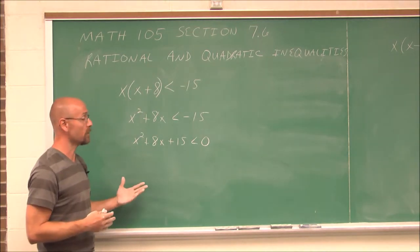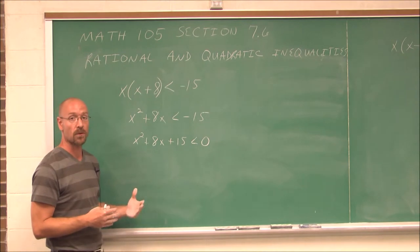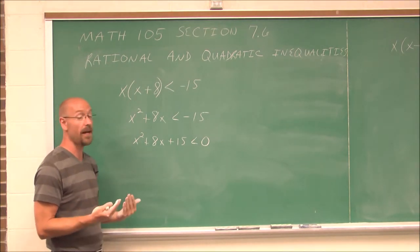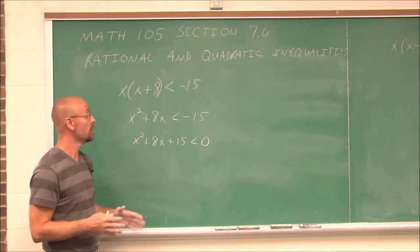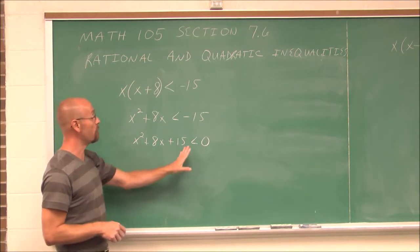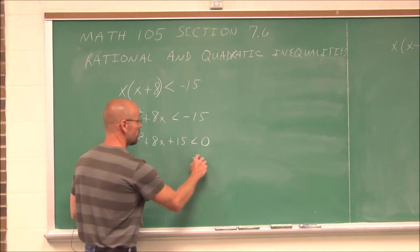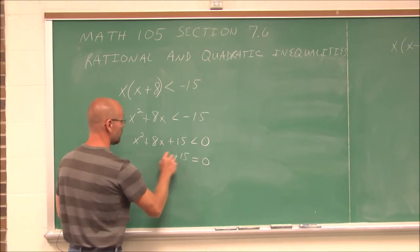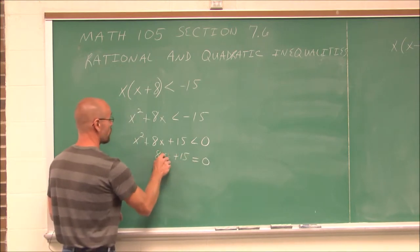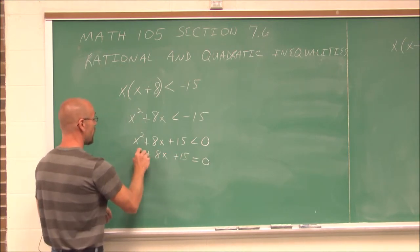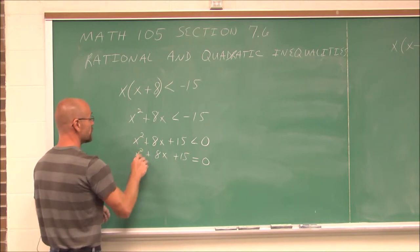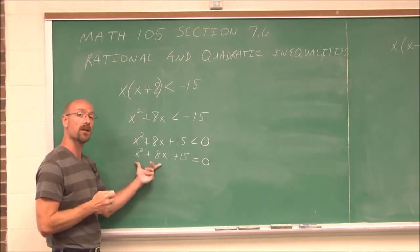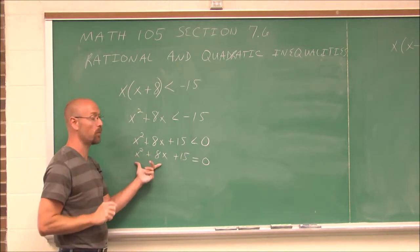To find those values, we're going to write what's called a related equation. For a moment, we're going to say, what if it was equal to 0? And by doing this, the values that we find are something called critical points.